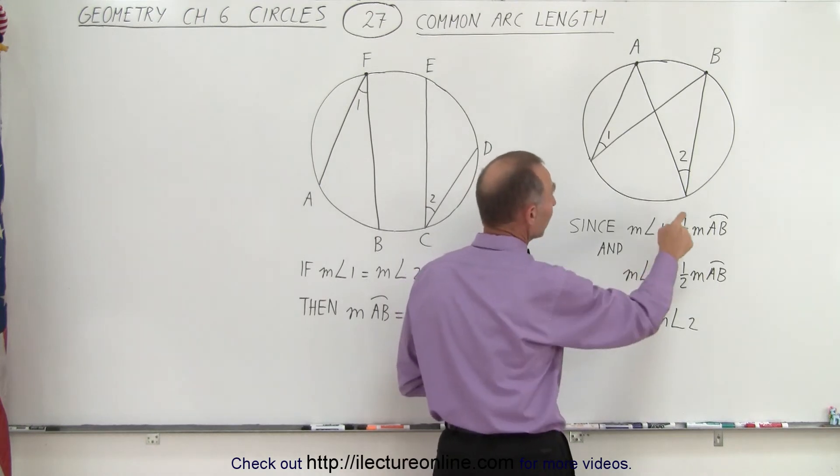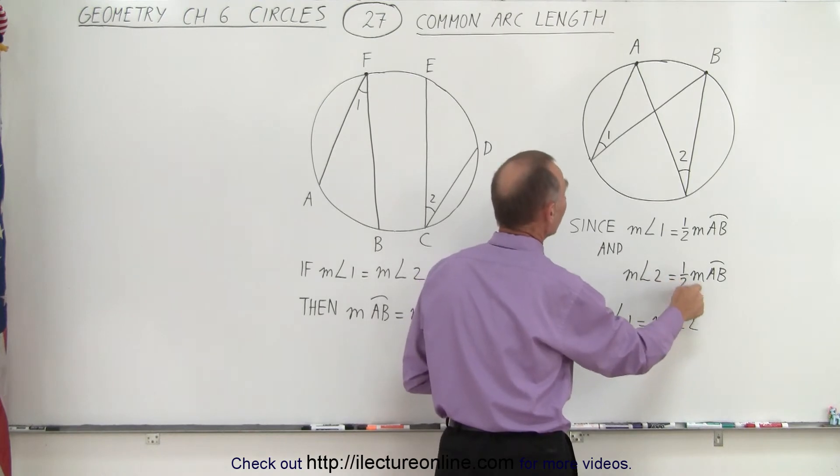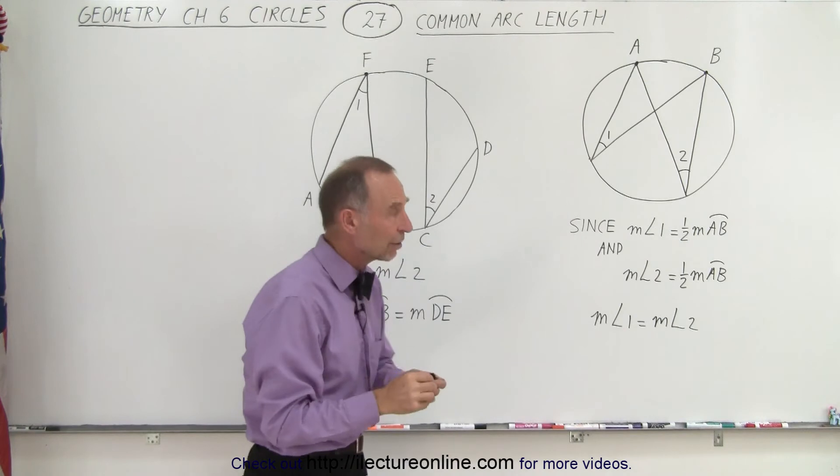Likewise, we can say that the measure for angle 2 must also equal one half the measure from A to B, again because that point right here is on the very edge of the circle.